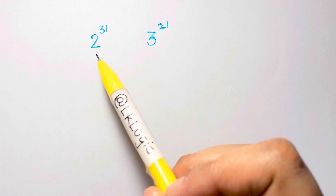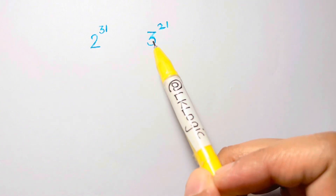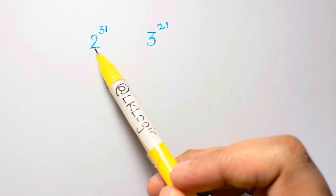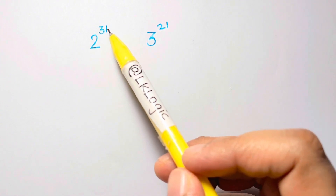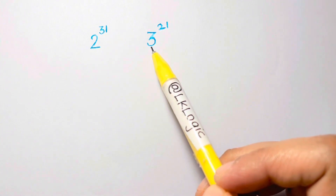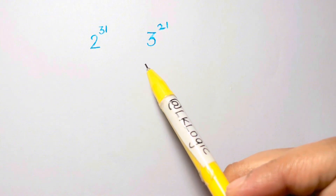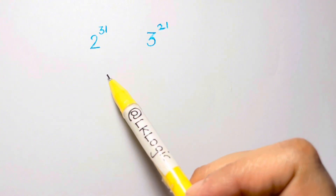Hi guys, here we have to find out which one is greater. Is it 2 to the power of 31 or 3 to the power of 21? So how should we do it?